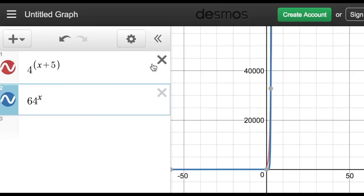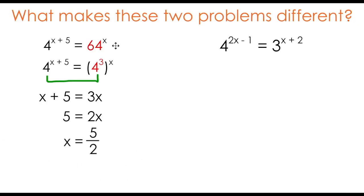To check my answer, I can graph both of these functions and find the point of intersection, confirming that 2.5 or 5 over 2 is the solution to this equation.